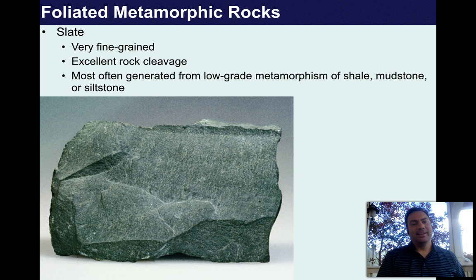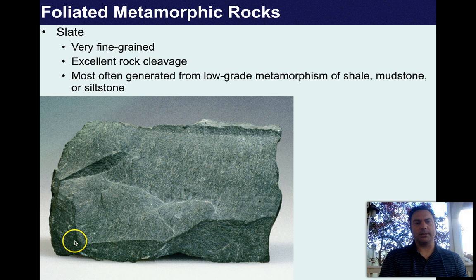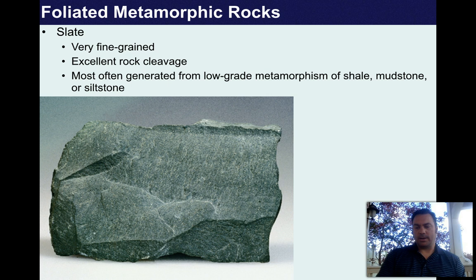Slate is very fine-grained, has excellent rock cleavage, and is usually generated from low-grade metamorphism of shale, mudstone, or siltstone. It's been seen in elementary schools nationwide — chalkboards are made out of slate. Phyllite is the next grade up, still showing layering indicative of a slate but noticeably bent, with little ridges and a shiny surface caused by muscovite and biotite starting to form. The degree of metamorphism is between a slate and a schist.